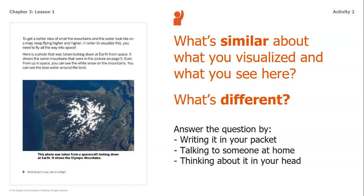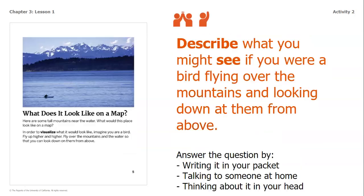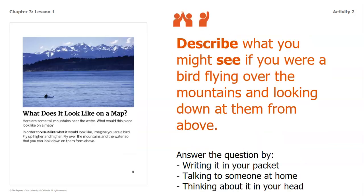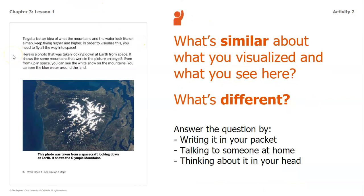When I'm thinking about similarities and differences, I thought that the water was still going to look blue, because it was blue in the picture on page five. I also expected there to be some white, because on page five we see there's snow on top of those mountains. Something that I think was different is that in this picture you can't really see the mountain peaks at all — the only way you know they're mountains is from the snow. I thought the mountains would look more jagged from the bird's eye view than they actually do.